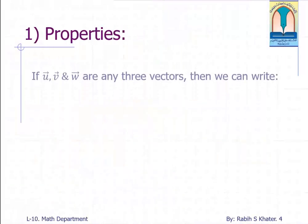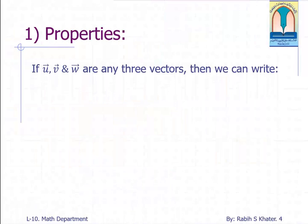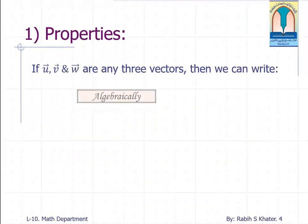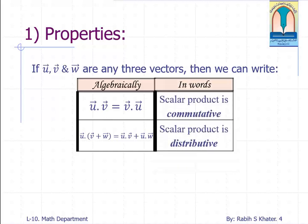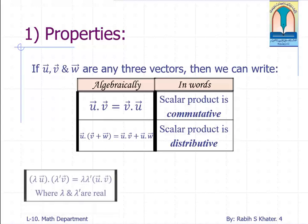Properties: If u, v, and w are any three vectors in the plane, then we can write that the dot product between u and v equals the product of v and u. U dot the sum of v and w equals the dot product of u and v plus dot product of u and w. In words, this means that scalar product is commutative and scalar product is distributive.